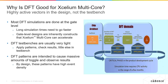So why is DFT particularly good for Accelium multi-core? Primarily because DFT simulations have highly active vectors that are focused on the design rather than the testbench. Most DFT simulations are done at the gate level, which have long simulation times where going faster will be valuable. Additionally, because they're gate-level designs, they are inherently something that multi-core can accelerate, so most of the DUT will be accelerated. The DFT testbenches are usually extremely light — they apply the patterns, check the results, and maybe do some initialization, but there's little else going on. As such, any activity will be in the chip rather than the testbench, and that amount of activity is extremely high.